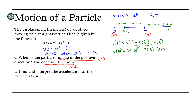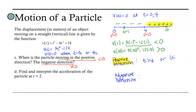Let's summarize. The particle is moving in a positive direction when velocity is positive, which happens for values of t greater than 4. We could say when t is greater than 4, or use interval notation: 4 to infinity. The particle is moving in the negative direction on the interval from 0 to 4, expressed as the inequality 0 less than t less than 4.